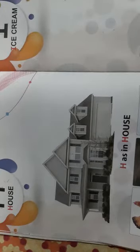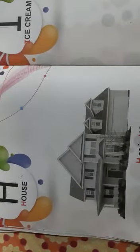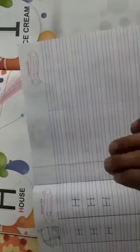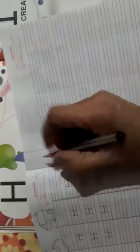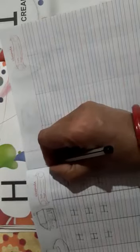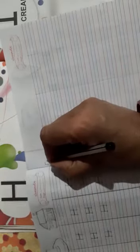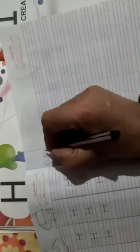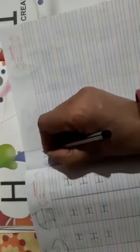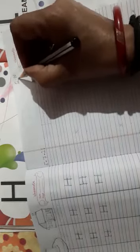We will do revision work in copy also, okay? Dear children, first you have to put date. So today date is 5, dash, month is 7, dash, year 2021, okay, and CW means class work.